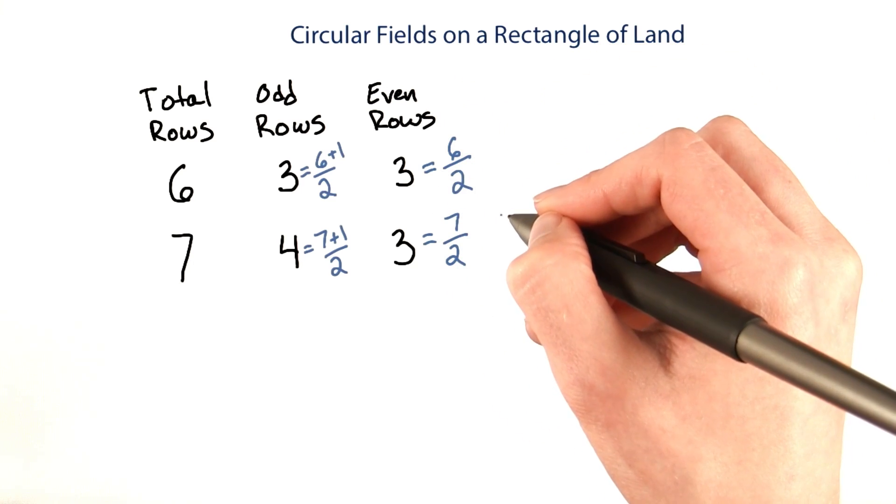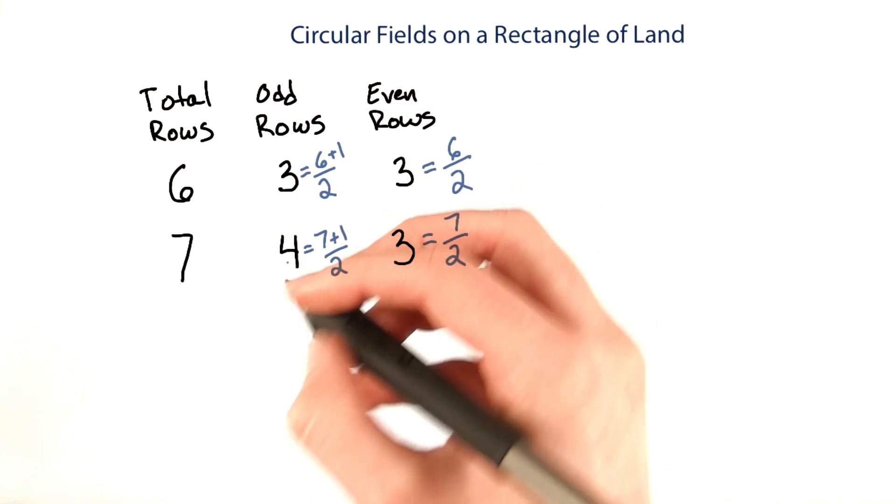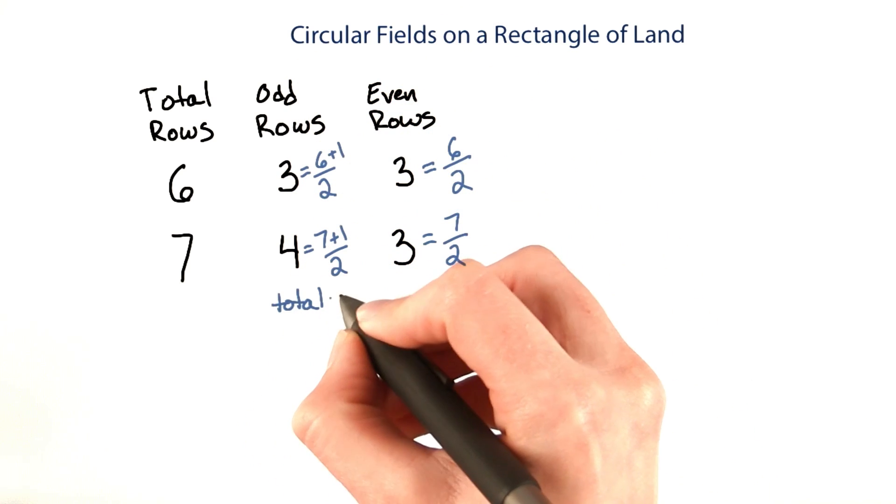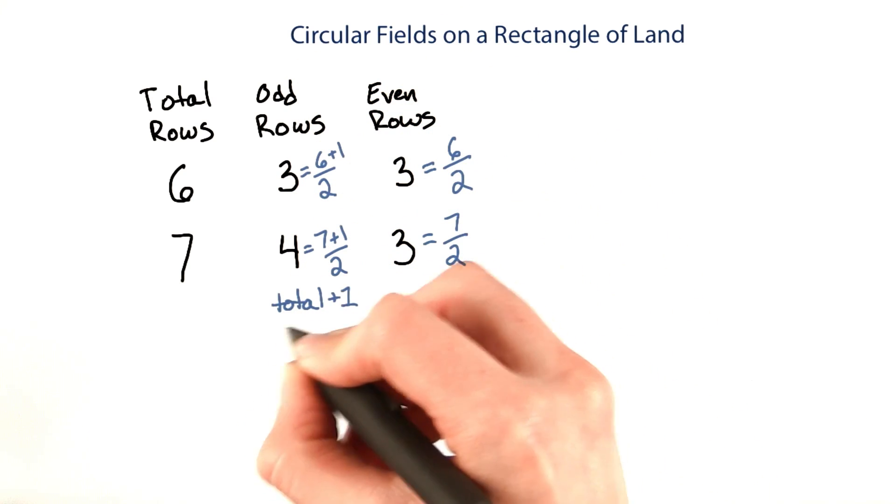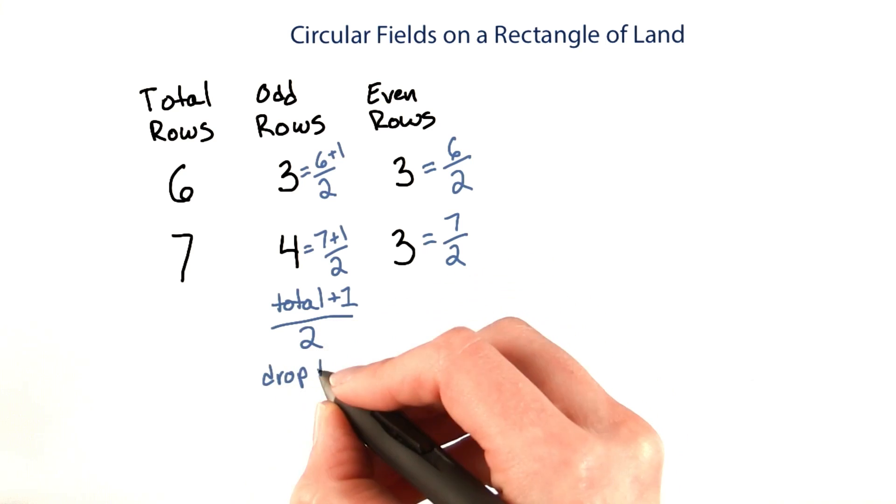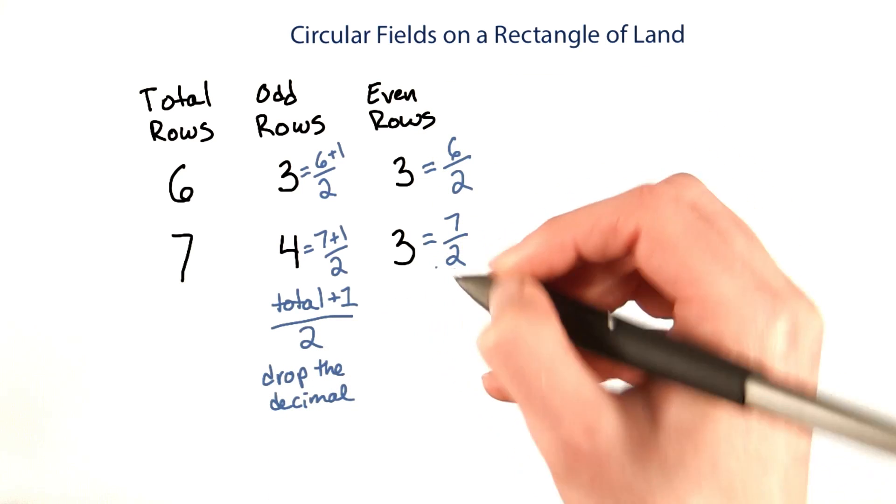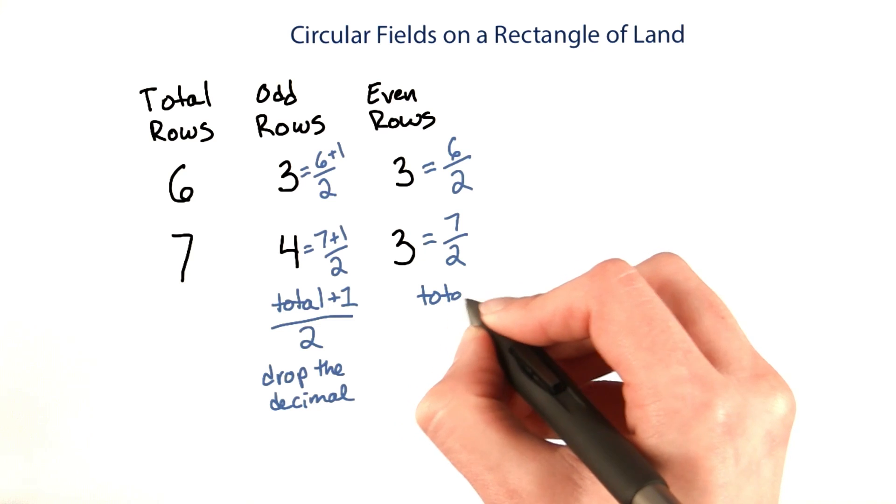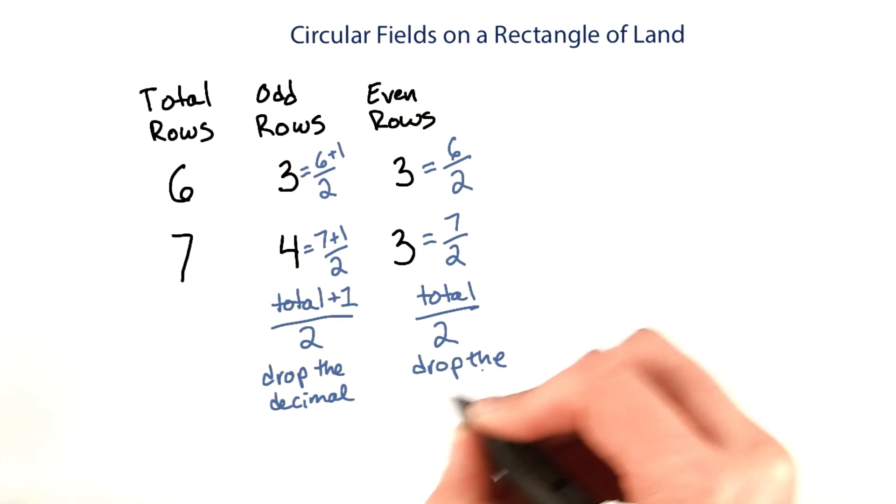If you don't believe me, you can try a few more examples. So it looks like the total number of odd rows is the total number of rows plus one over two, and then drop the decimal. Whereas the number of even rows is just the total number of rows over two, and we drop the decimal.